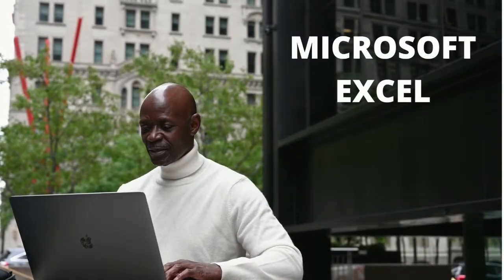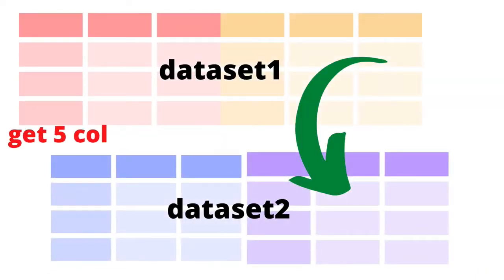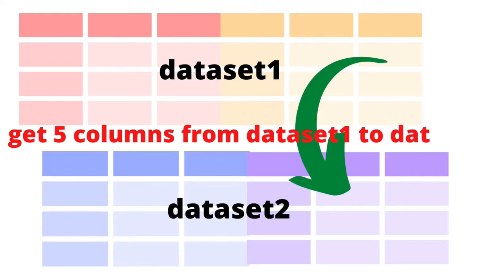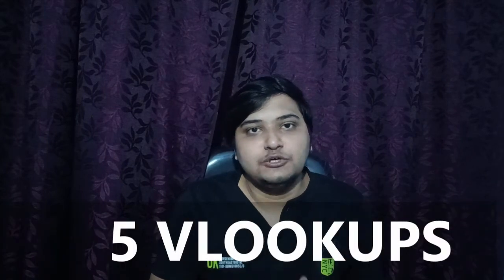This will happen a lot while solving problems in Excel — when we have multiple datasets and want to play around with them. For example, if I want to grab five columns from one sheet into another using a common column, you might say just do a simple VLOOKUP. But think about how inefficient that is — we'd need five VLOOKUPs just to get five different columns.